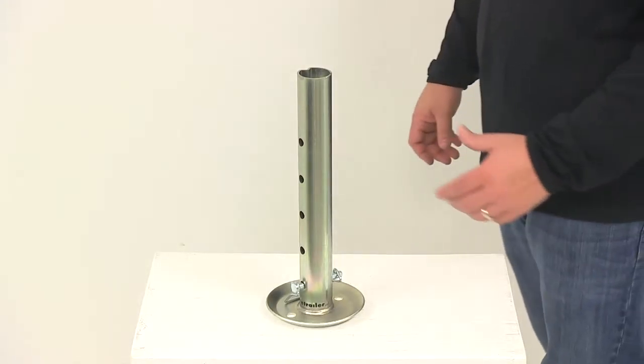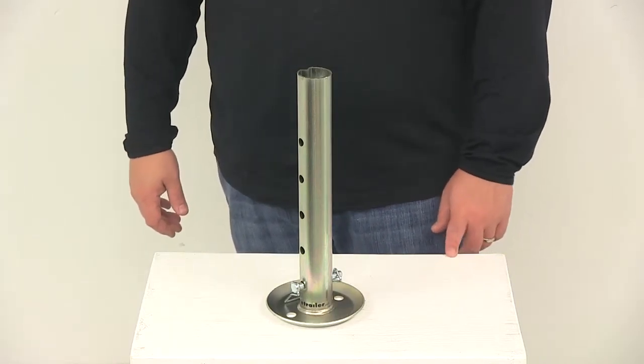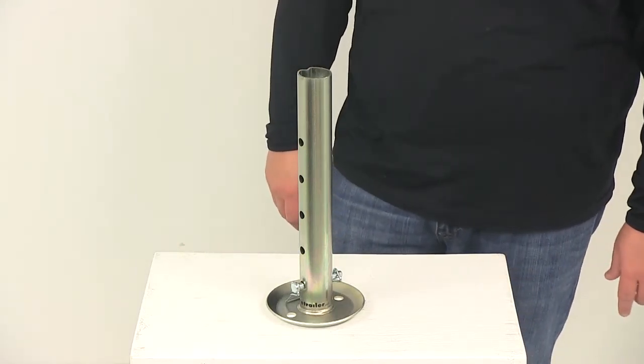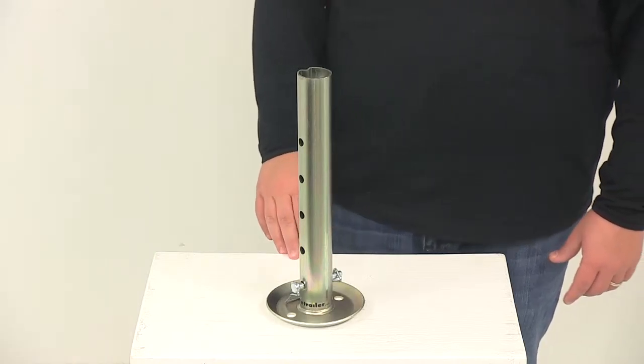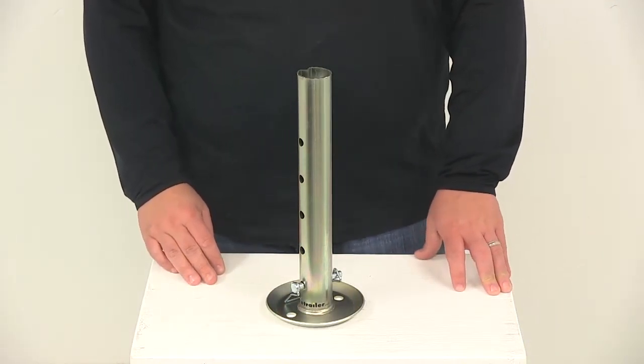Today we're going to be taking a look at a drop leg with a round foot plate for round trailer jacks. Drop legs increase overall extension for maximum adjustability. It also allows you to not have to crank your jack as much in order to make contact with the ground.